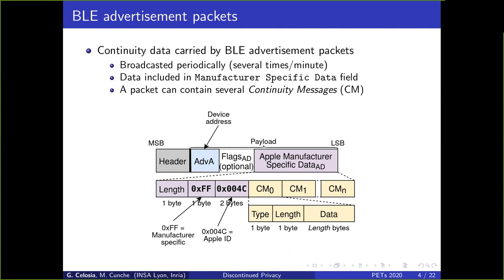To carry data, the Apple Continuity Services use the BLE Advertisement Packet. Such packets are broadcasted periodically, several times per minute. The data are included in the manufacturer-specific data field, which can contain several continuity messages that are all formatted as a type, length, and data.